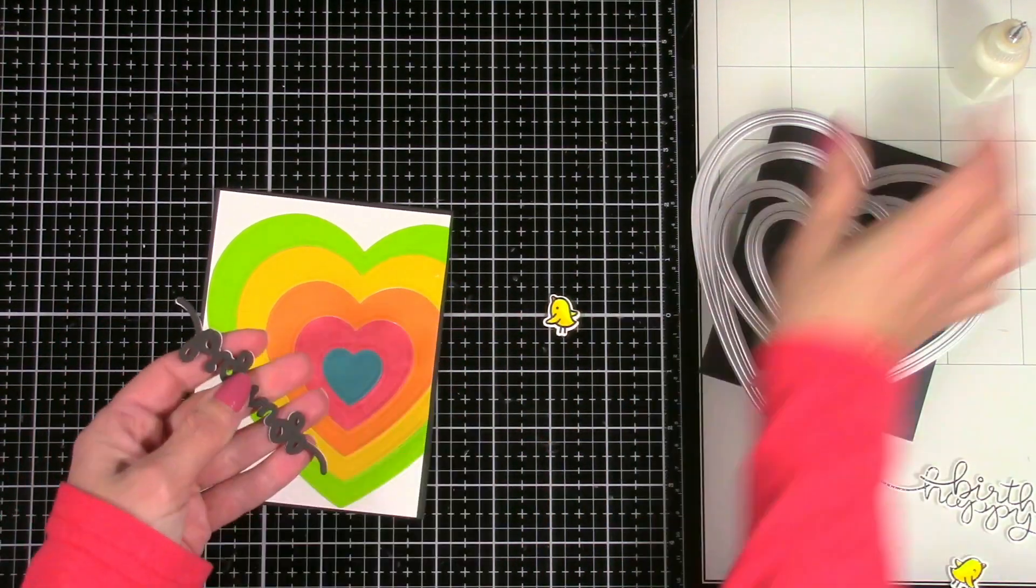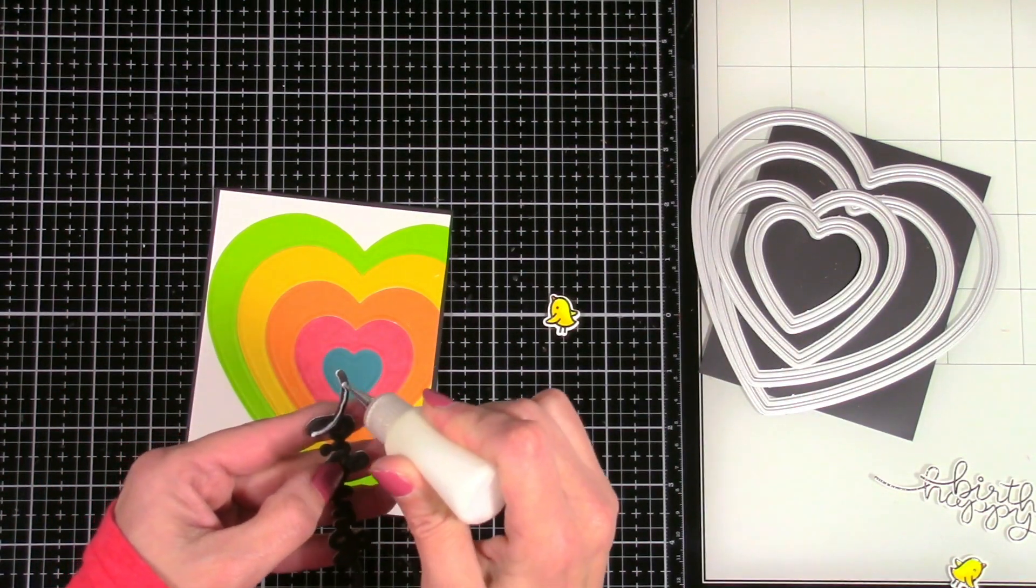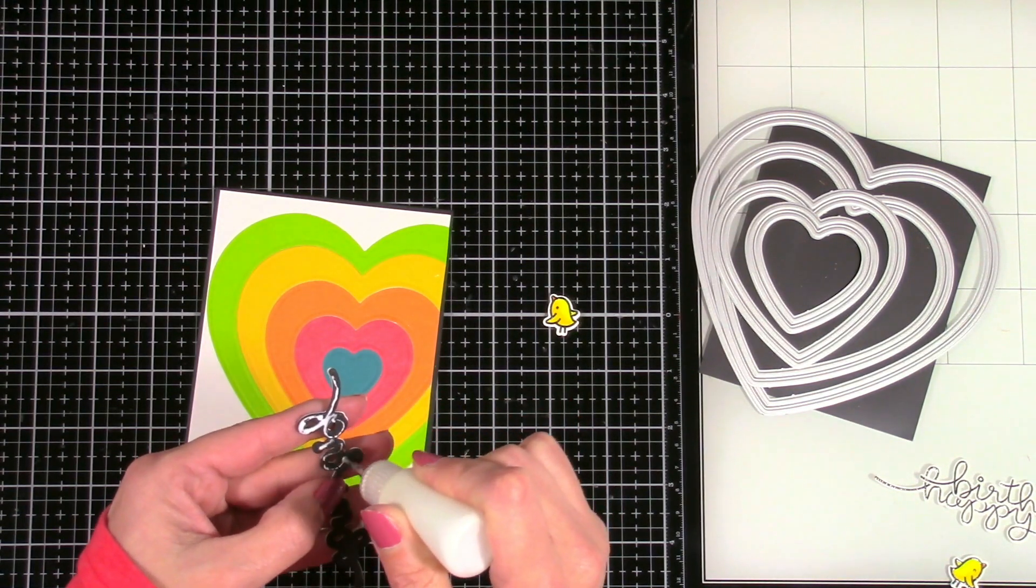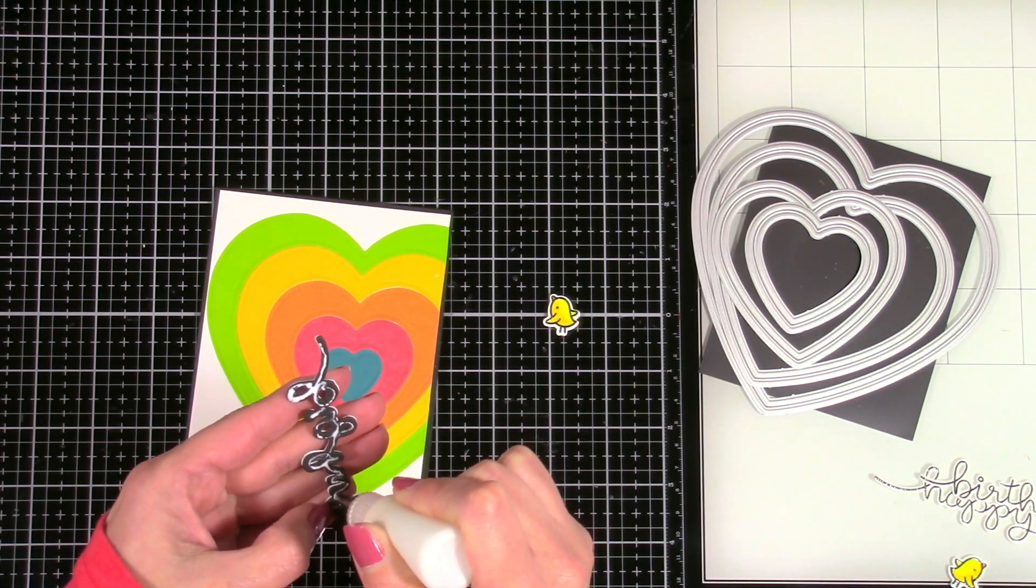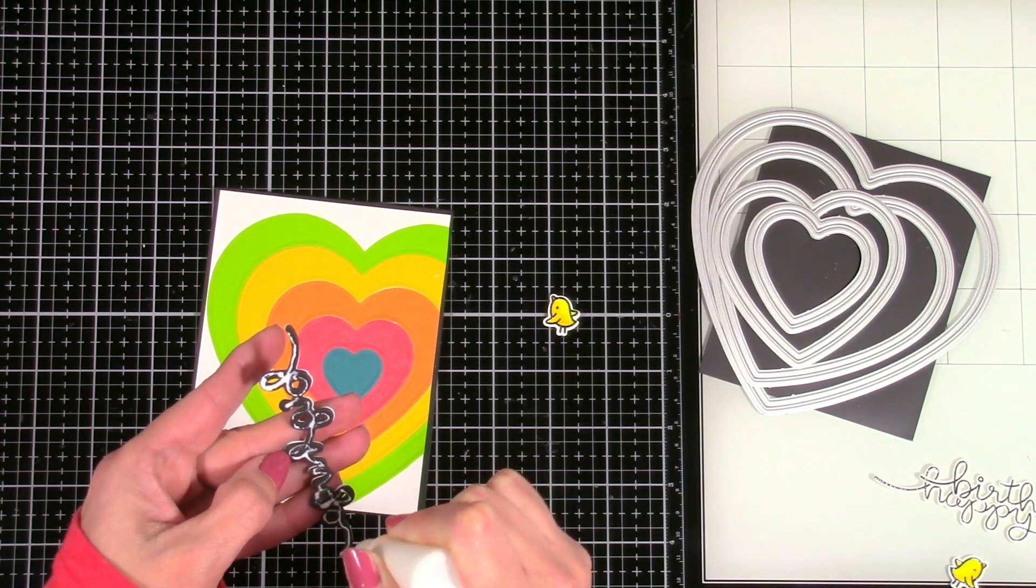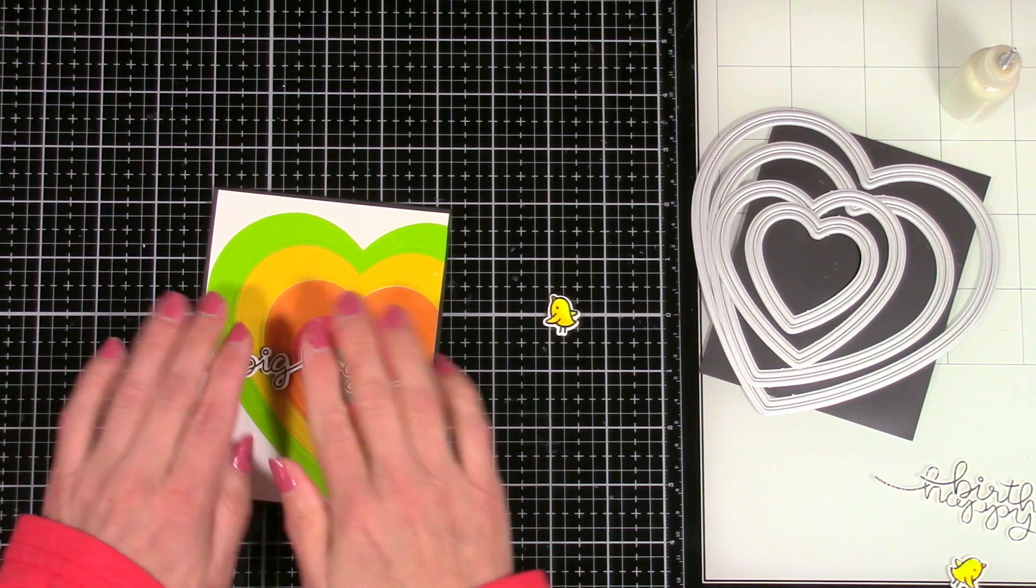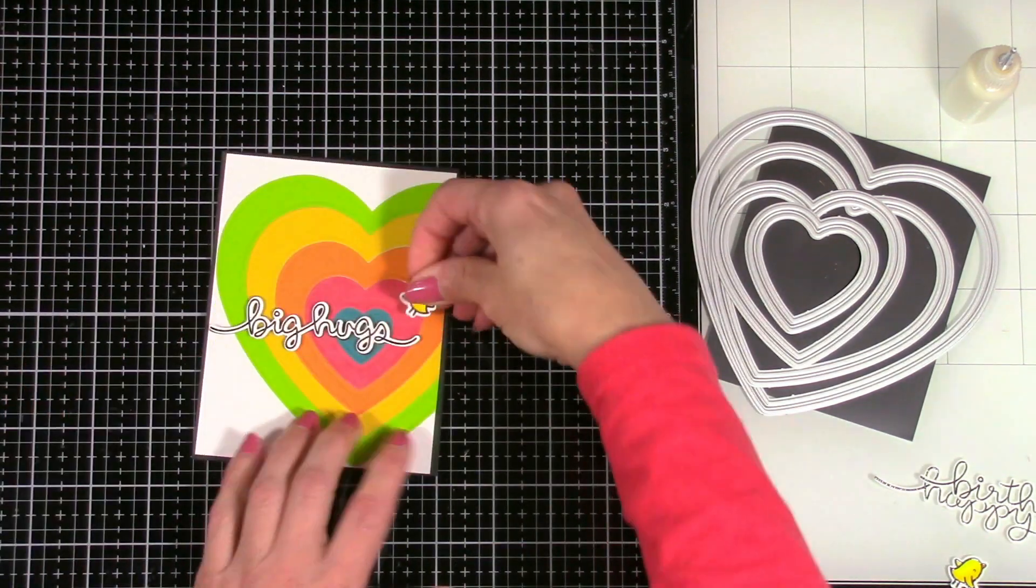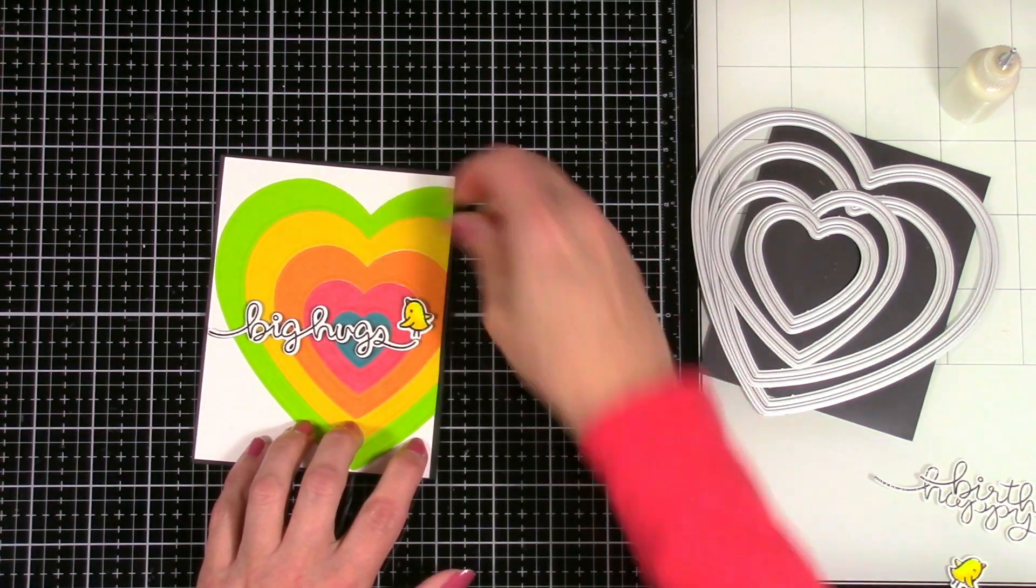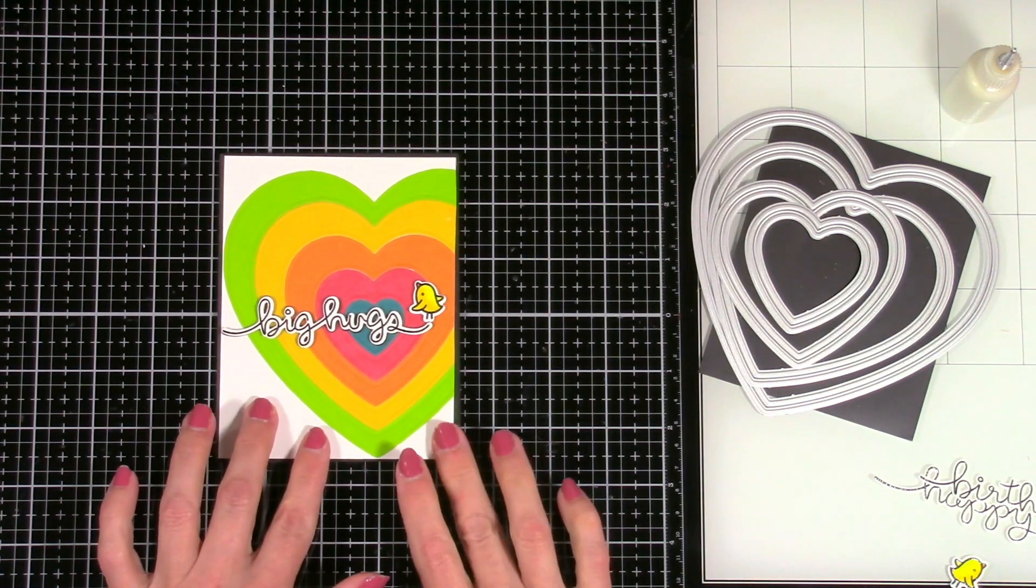So for this one, I'm using the Big Hugs. And again, this is the Lawn Fawn Sayings. And I have popped it up on some Fun Foam. Give me that little bit of dimension. And it's going to go straight across the center of my hearts. And then my little bird here, I'm also going to pop him up and have him kind of standing on the end of the Big Hugs. And that will complete that card.